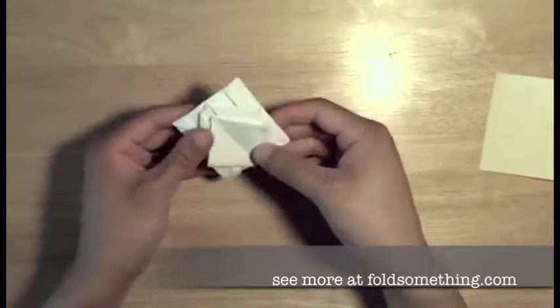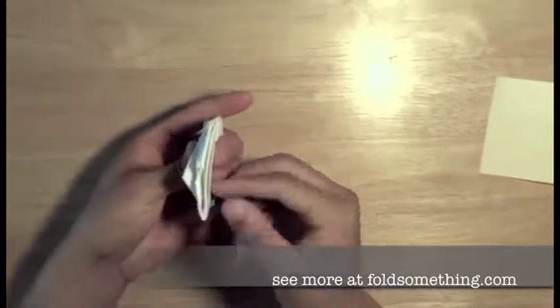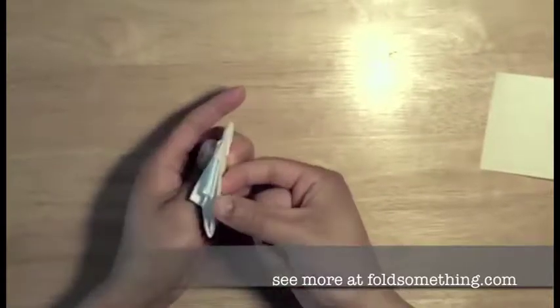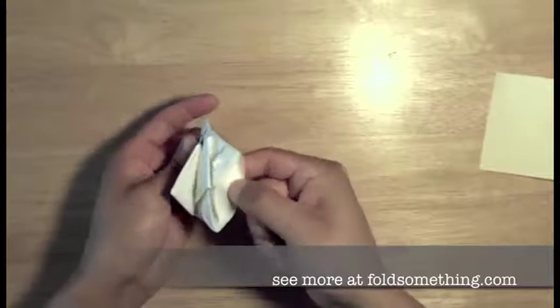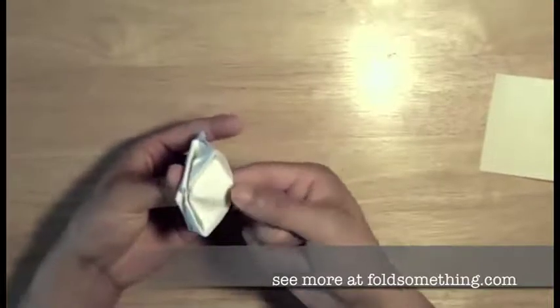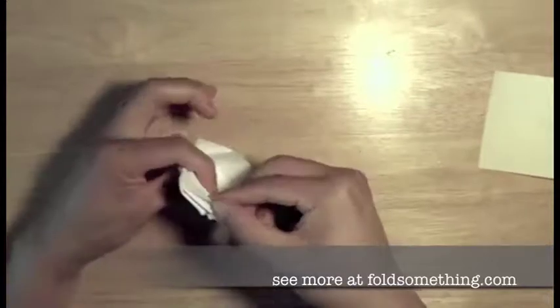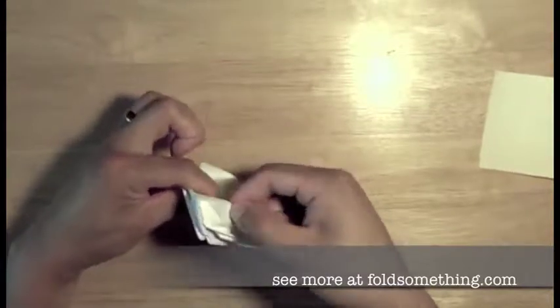And believe it or not, we're almost done. But it doesn't really look like a tank until you pop the wheels out. You're going to want to put your index finger here and then use your thumb to pull down and out on this tab like so. And of course, we'll do the same on the other side.